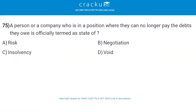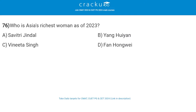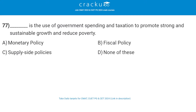A person or a company who is in a position where they can no longer pay the debts they owe is officially termed as a state of insolvency. Who is Asia's richest woman as of 2023? The answer is Savitri Jindal. The use of government spending and taxation to promote strong and sustainable growth and reduce poverty is called Fiscal Policy.